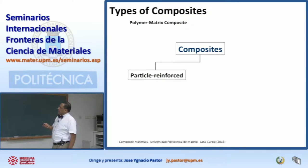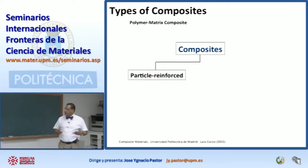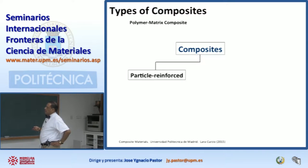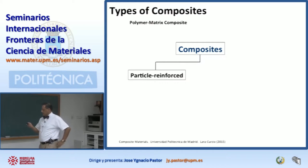For example, people say we can classify them by the type of the matrix — you can have polymer matrix composites, metal matrix composites, ceramic matrix composites. Sometimes people say they want to classify them by the type of reinforcement: particle reinforced composites or continuous fiber reinforced composites.